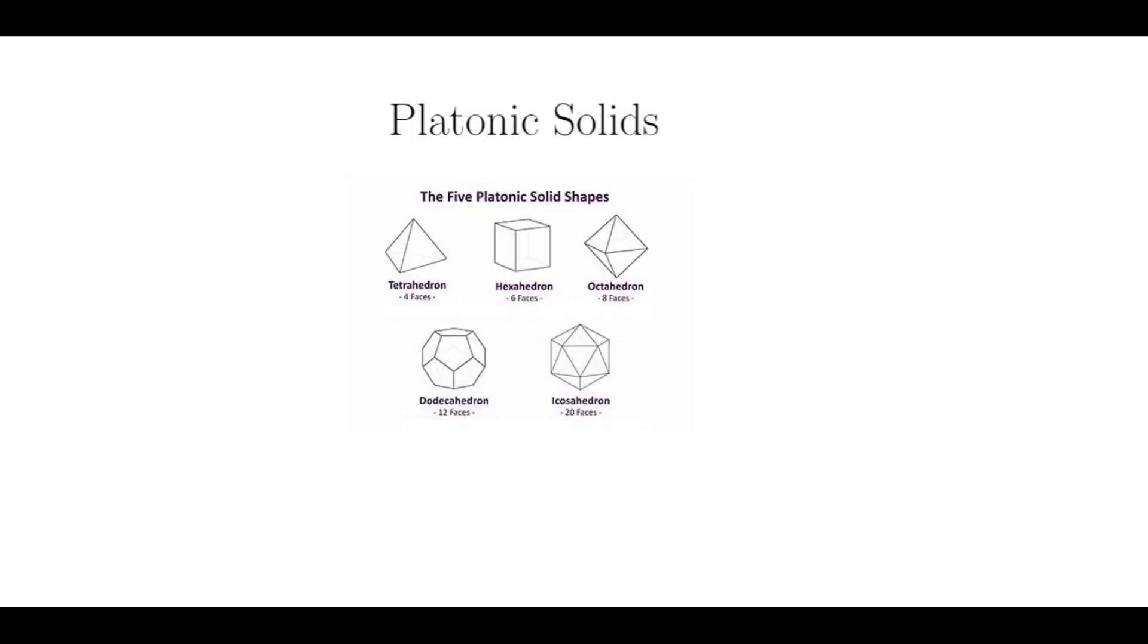So getting back to the platonic solids, the simplest is the tetrahedron or triangular pyramid, which is a three-dimensional analog of the triangle. You'll notice it has four sides that are all equilateral triangles.